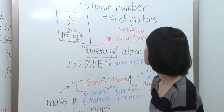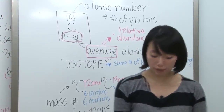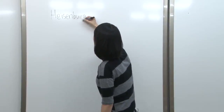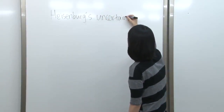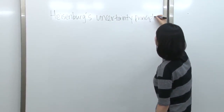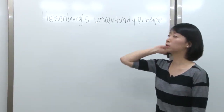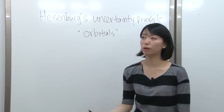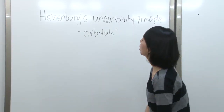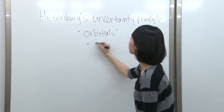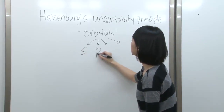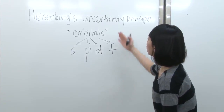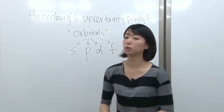Now let's talk more about Heisenberg's uncertainty principle. Different from Bohr's orbit — electrons circling around the nucleus — Heisenberg talked about orbitals, a region where electrons can possibly be found. For orbitals, we talk about four types: S, P, D, and F. There are more orbitals, but they're irrelevant to the SAT. You can figure out which orbital an element is in just by looking at the periodic table.